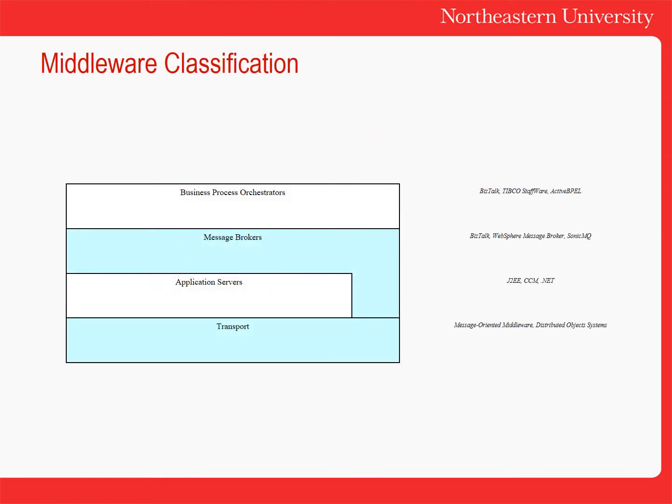Here's a very simple classification of the areas of middleware. At the bottom there you can see there's a transport layer, which is essentially a way to connect the nodes in a distributed system. On top of that there are application servers, which typically enable you to implement the APIs that a distributed system supports. Message brokers do something similar but have a slightly different purpose, and on top of this you'll also see things called business process orchestrators or workflow systems, which enable you to orchestrate workflows across a number of distributed systems.